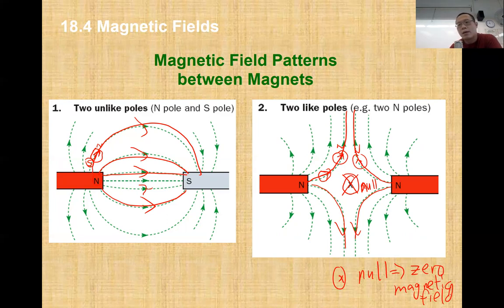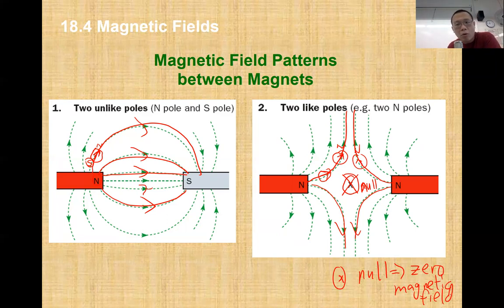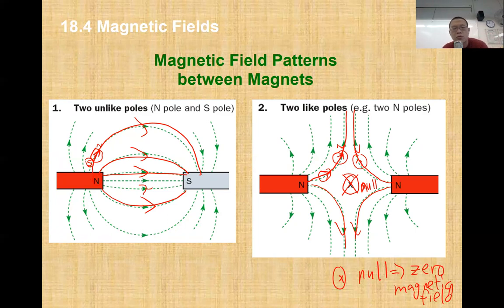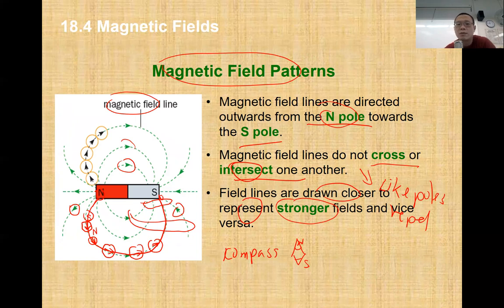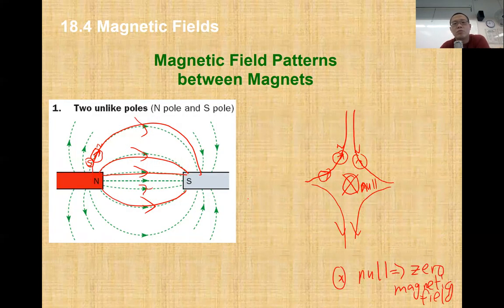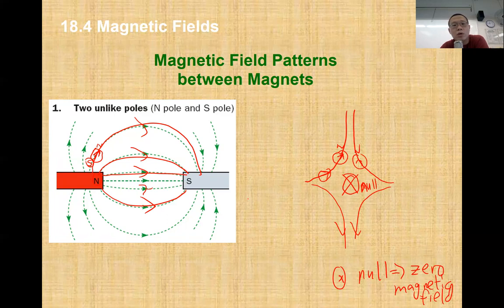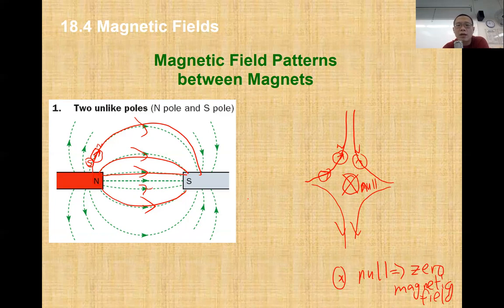But the common thing about all these field line patterns is that the way we draw and derive the field lines is the same - by use of a compass. I plot the field lines from the magnet, line by line, area by area, point by point, for all types of magnets, and get different field line patterns. Rule of thumb: make sure field lines always point from north to south, field lines don't cross each other, and field lines are drawn stronger and closer towards the magnet and get weaker and further apart as they spread outward.